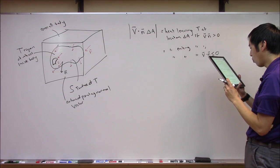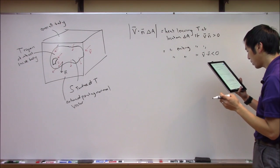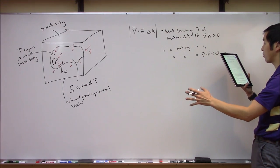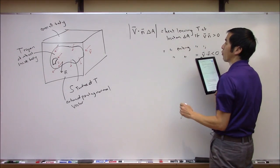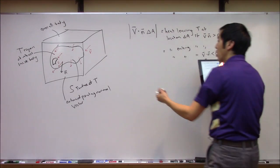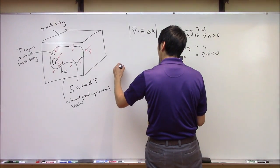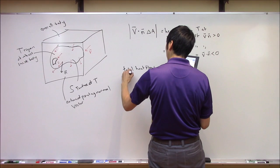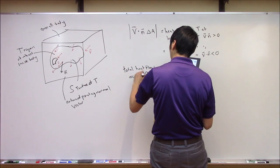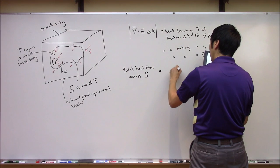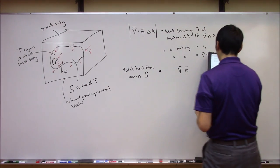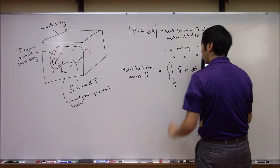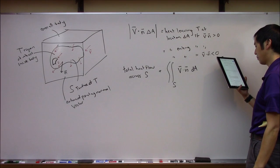So what we should do here is think about the total amount of heat flow across the entire surface S. We integrate all over the delta A's around this surface — so the total heat flow across S is just the surface integral of V dot n dA over the surface S.